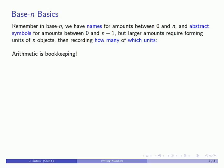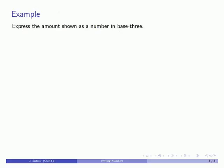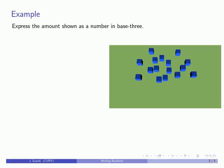So for example, let's take an amount and see if we can express this amount as a number in base-3. Remember in base-3 we have names for the amounts 0, 1, 2, and 3, and we have symbols for the amounts 0, 1, and 2. We don't have a symbol for a set of three things, so what we'll do is start by taking sets of three, and we'll look and see if we can find a set of three.